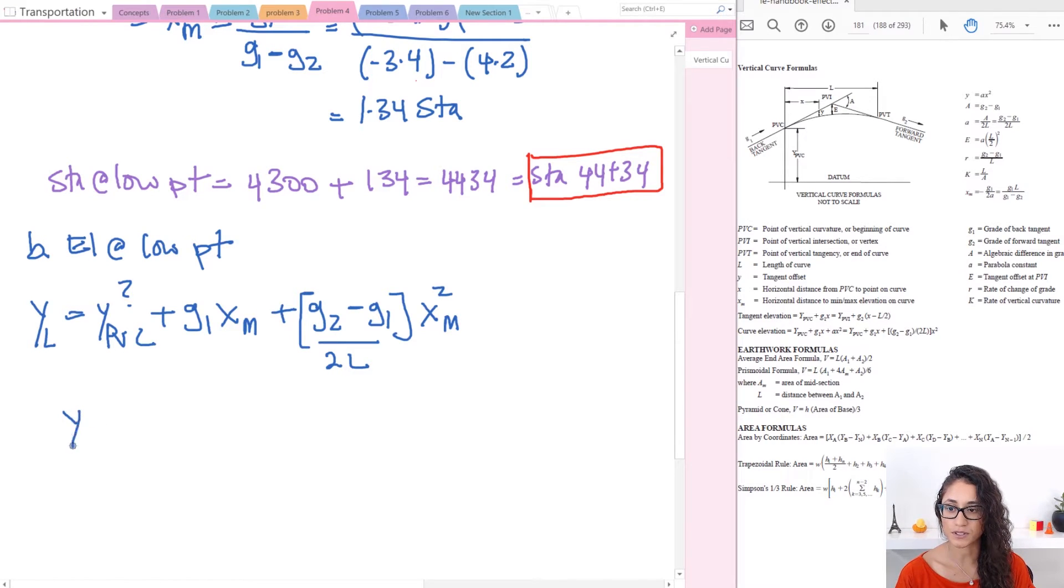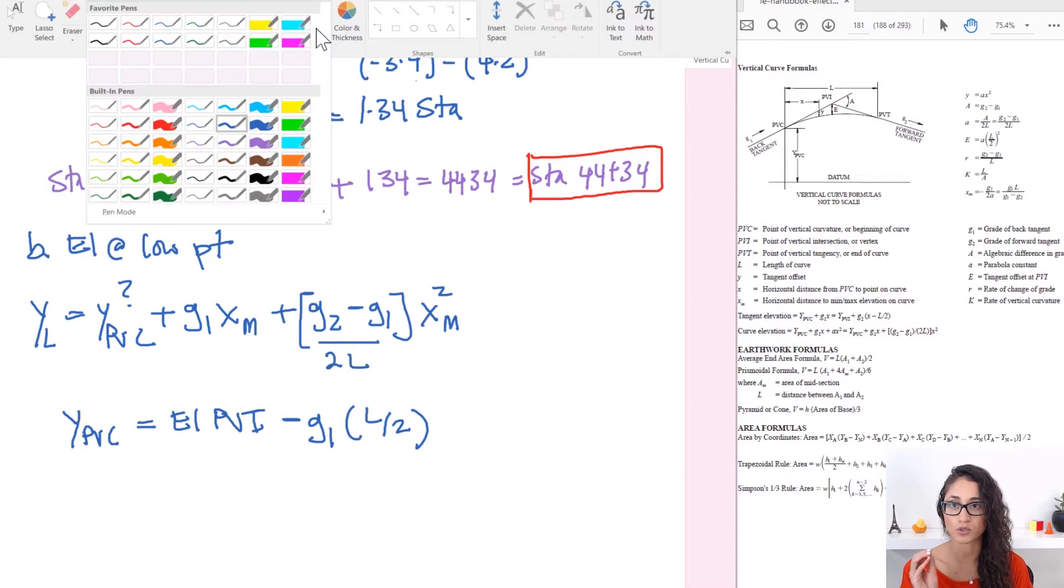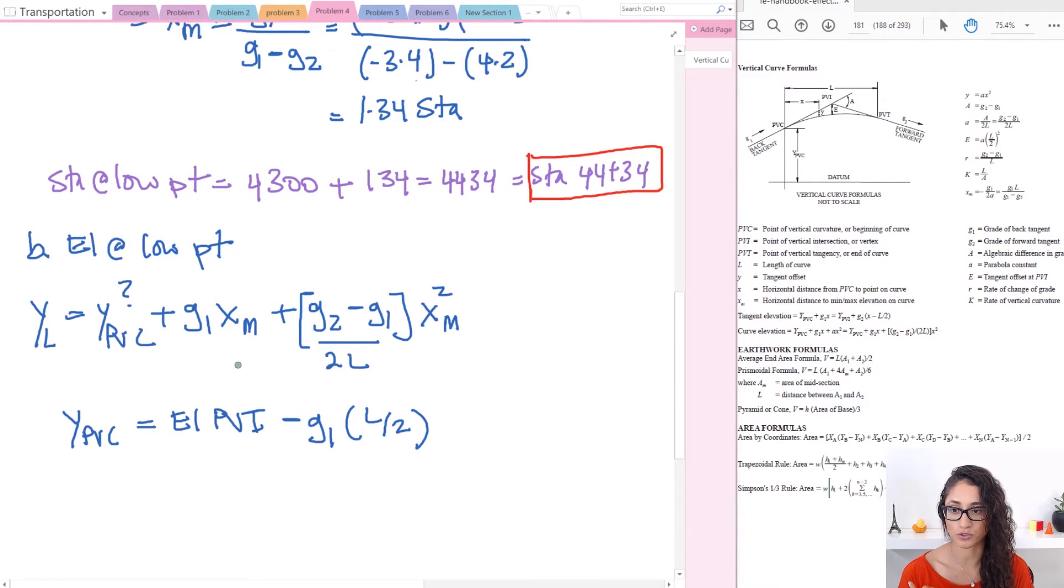So Y at PVC equals the elevation at PVI, so we're going to do minus G1 times L over 2. These equations are not on the reference handbook so make sure you guys remember them in case you're trying to look for it. Just write them down and remember it.